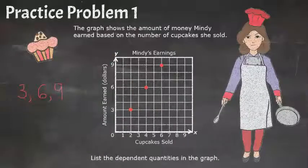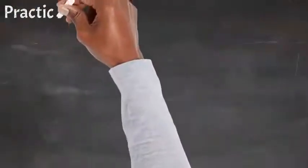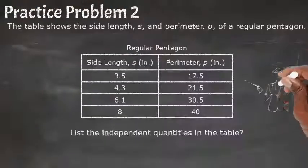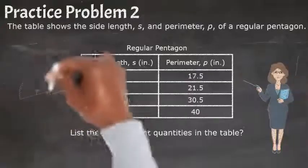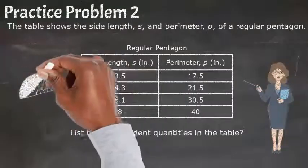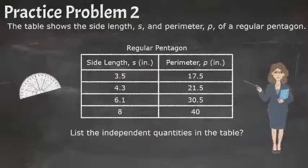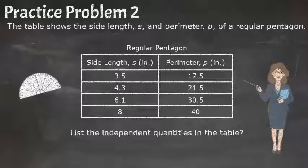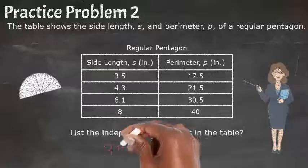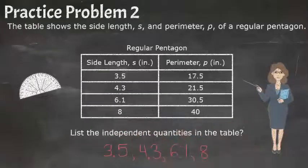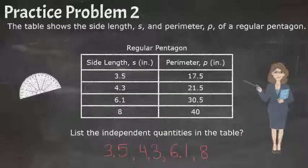Let's check out another practice problem. This one says that the table shows the side length S and the perimeter P of a regular pentagon. List the independent quantities in the table. Since the perimeter of a polygon depends on the side length, side length is independent and perimeter is dependent. So if we want just the independent quantities, we want to list the side lengths: 3.5, 4.3, 6.1, and 8. Those would be all our independent quantities.